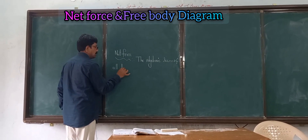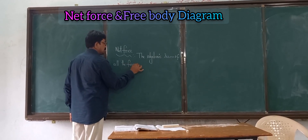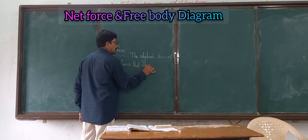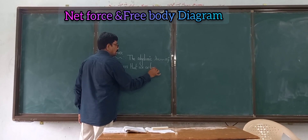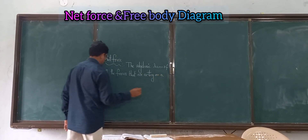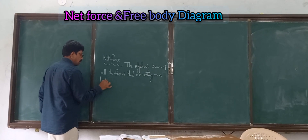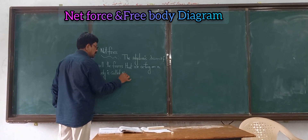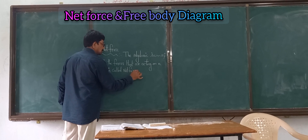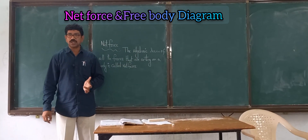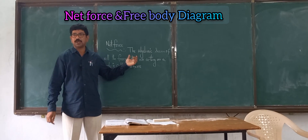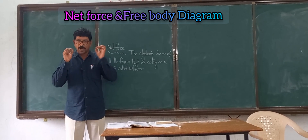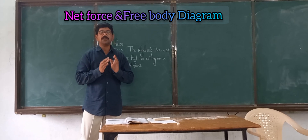The forces that are acting along the positive x-axis are taken as positive, and the forces acting in the opposite direction towards the negative x-axis are taken as negative. At the same time, the forces acting above the origin are taken as positive — towards the north side of the y-axis — and below the y-axis are taken as negative. Net force is nothing but the algebraic sum of all the forces acting on a body.